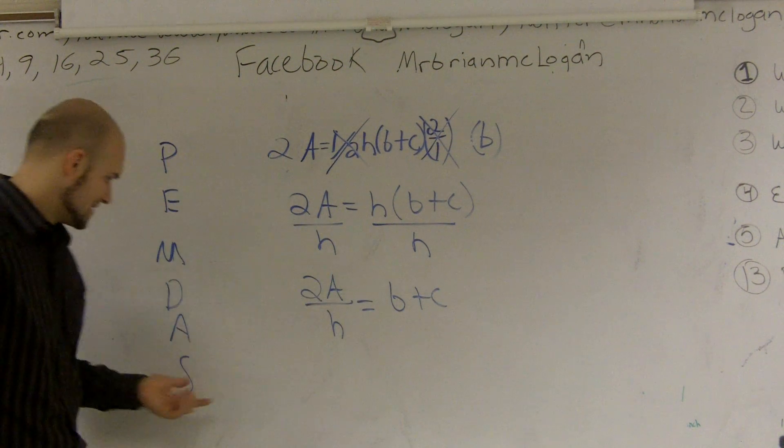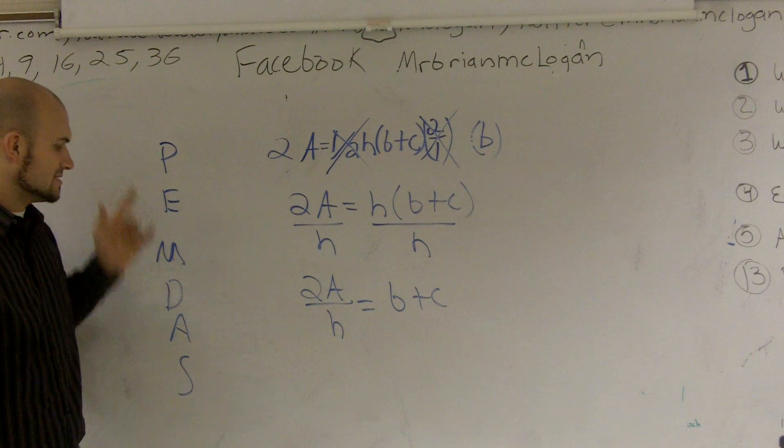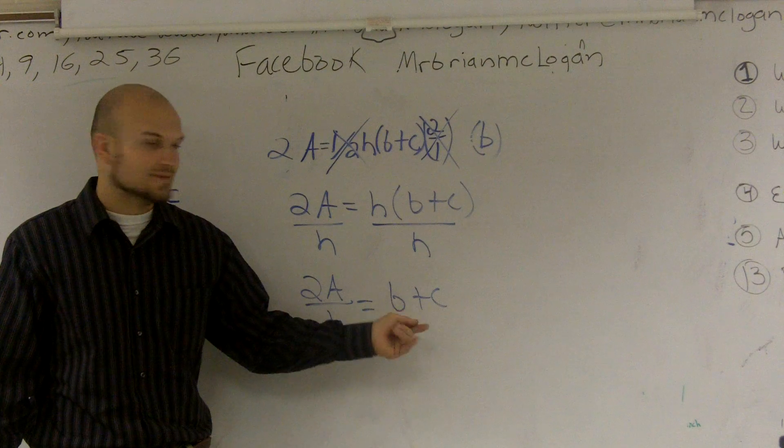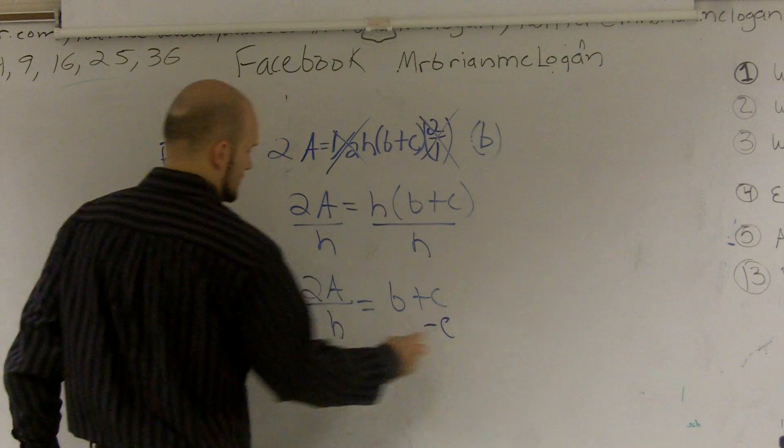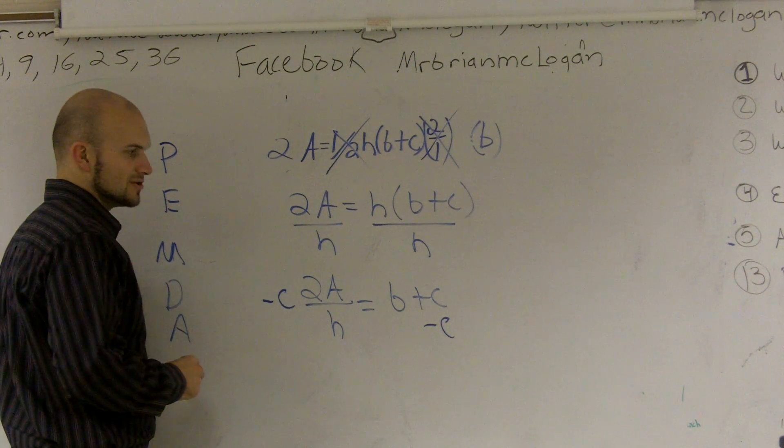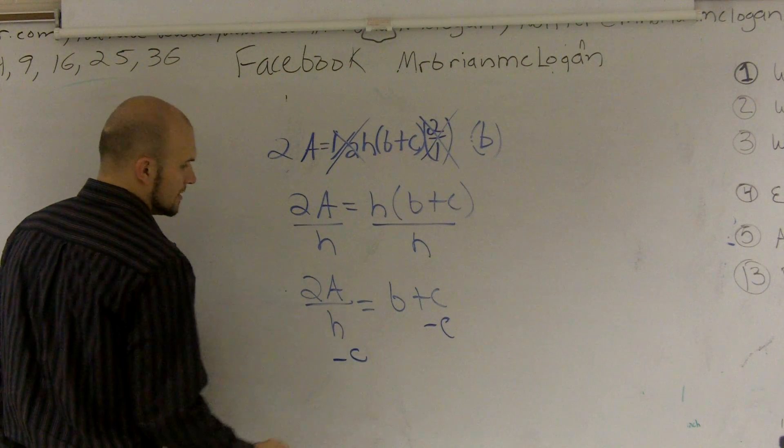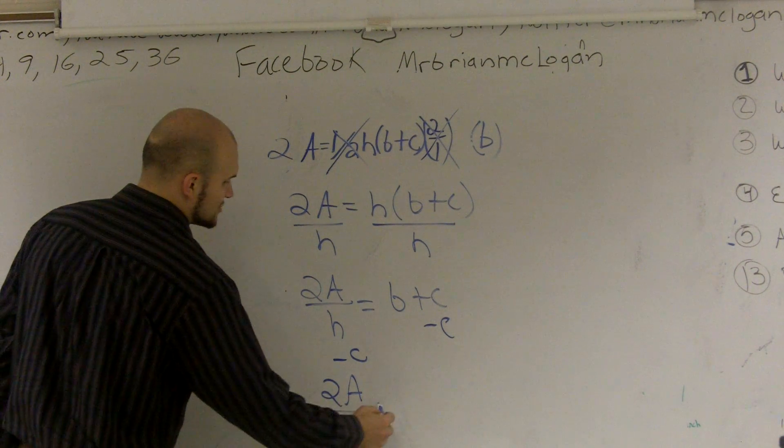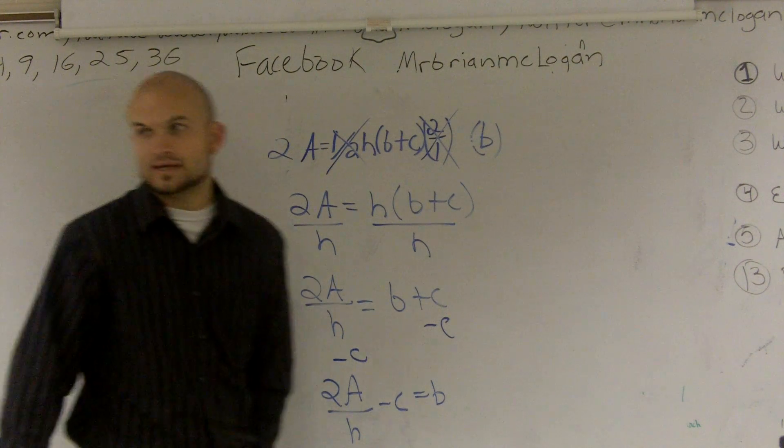Now I'm inside my parentheses. What do I need to undo that's happened to my B? Since my B is being added by C, I need to subtract C on both sides. Therefore, my final answer is 2A divided by H minus C equals B.